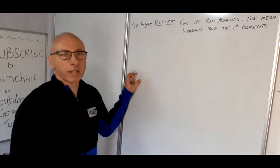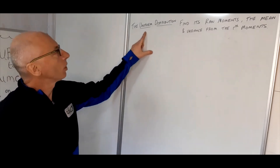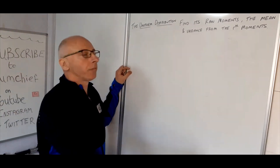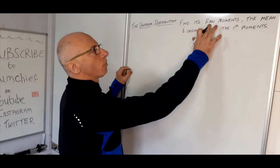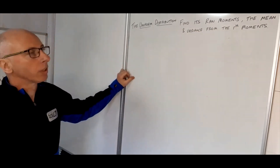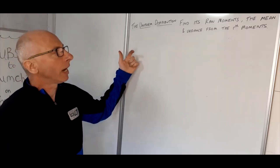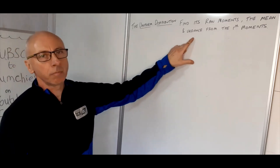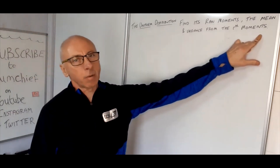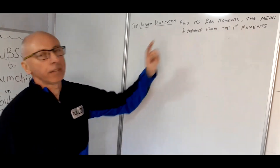We're going to look at some statistics, and in particular we look into the uniform distribution. What we're going to find are the raw moments of the uniform distribution, and then when we've found our formula for that, we're going to find the mean and variance from it using the raw moments associated with the mean and the variance.